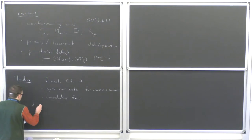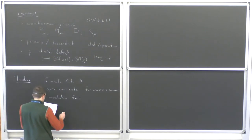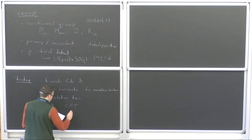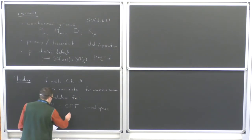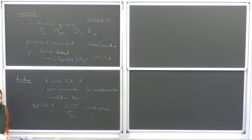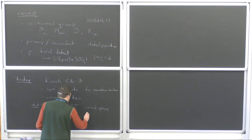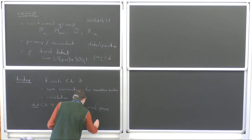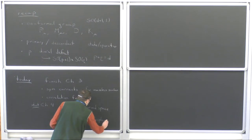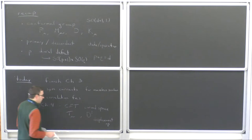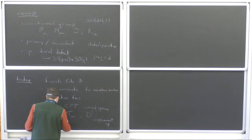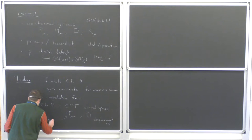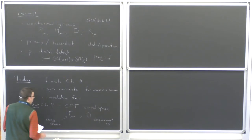And then hopefully, if I have enough time, we'll start chapter four. This will bring us to a discussion of conformal field theory in curved space — and in particular, how that lets us access some universal operators in conformal field theory, namely the stress tensor. And in the defect context, something called the displacement operator, which I'll write with a D with a superscript i. That's my plan.